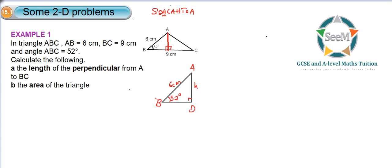So that means we need to use the sine ratio. So we'll have sine 52 degrees equals opposite is H, hypotenuse is 6. So if we cross multiply to make H the subject of the formula, we'll have H equals 6 sine 52. If we key that into our calculator, we would get 4.73 cm to 3 significant figures.